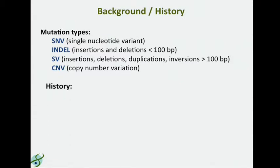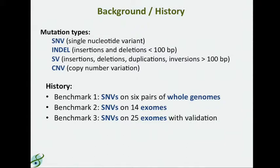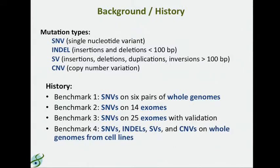Since this is benchmark four, clearly there are three other benchmarks which occurred prior to this. Benchmark one was single nucleotide variant calling on six pairs of whole genomes. Benchmark two was single nucleotide variant calling on 14 tumor-normal pairs of exomes. Benchmark three was again single nucleotide variants on 25 pairs of exomes, this time with associated validation data — deep sequencing data over selected regions to validate the presence of mutations. What I'm calling for participation for today is benchmark four, which in addition to single nucleotide variants will take indels, SVs, and CNVs into account, done on whole genomes derived from cell lines.